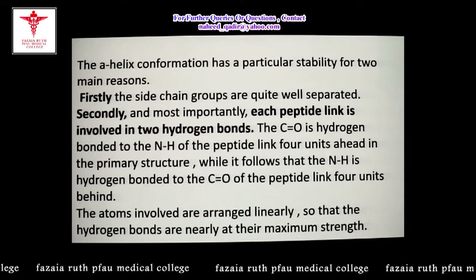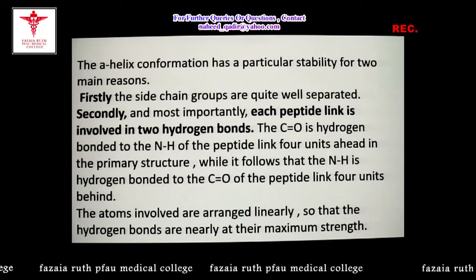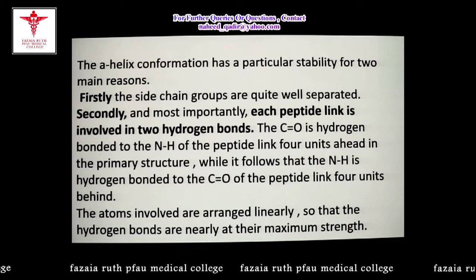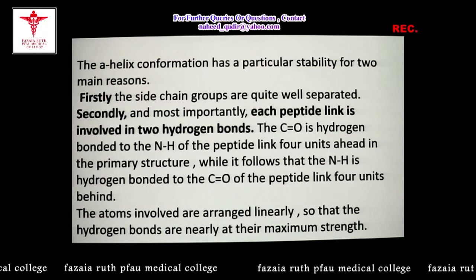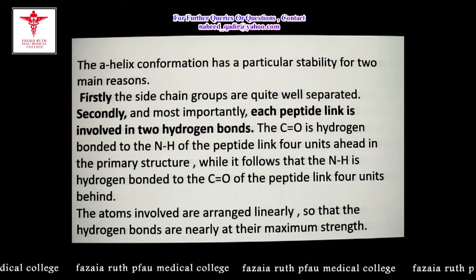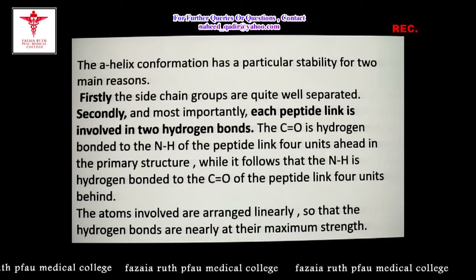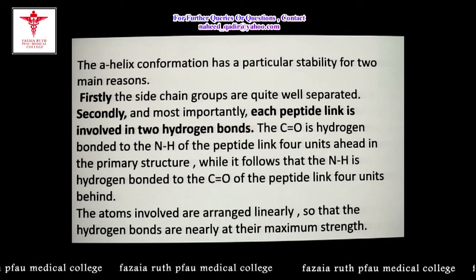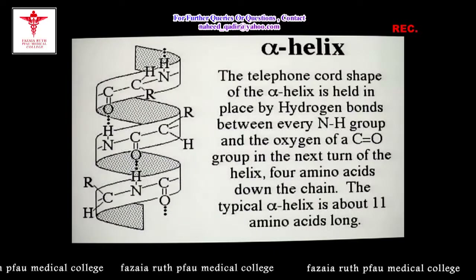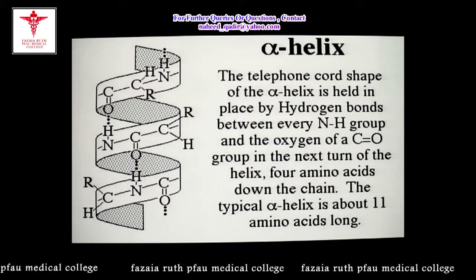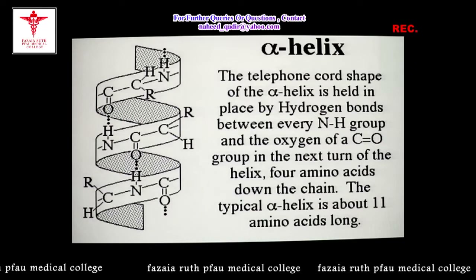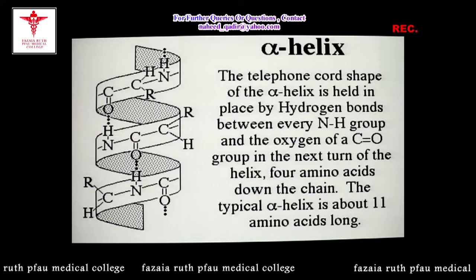The alpha helix conformation has particular stability because of two reasons: the side chain groups are quite well separated, and each peptide link is involved in two hydrogen bonds. The alpha helix is one example of the secondary structure of protein, and the peptide group participates in hydrogen bonding in two directions.